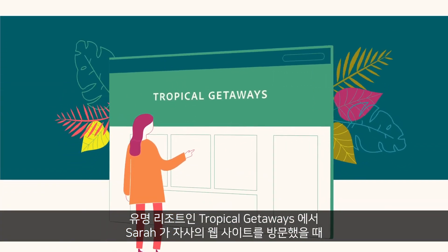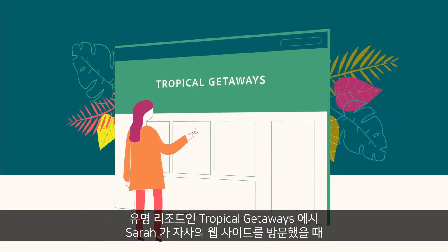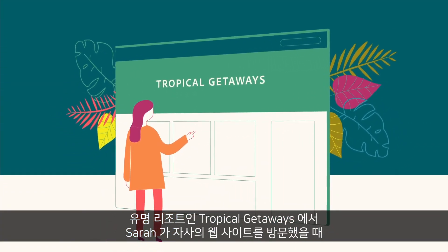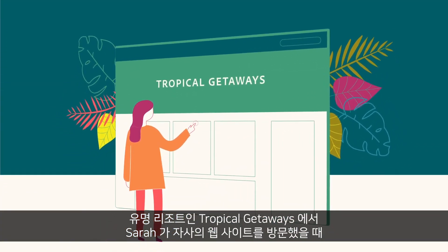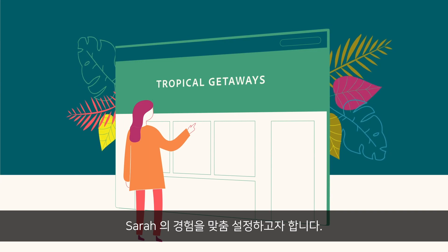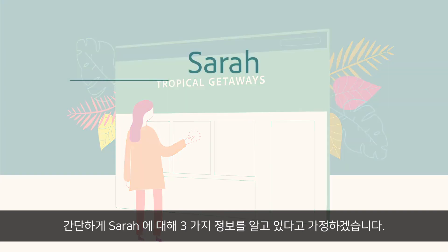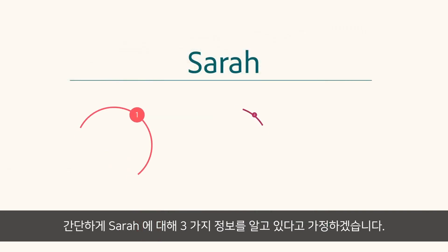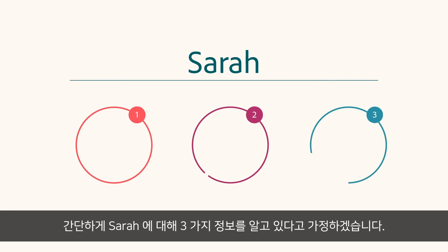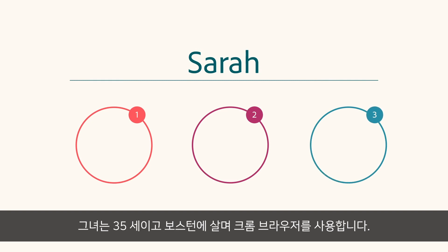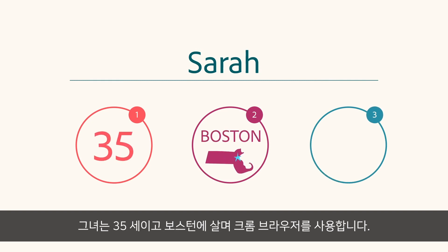Tropical Getaways, a major travel resort, wants to personalize the experience Sarah has when she visits its website. Let's assume for simplicity that we know three things about Sarah: she's 35, lives in Boston, and uses Chrome as her browser.